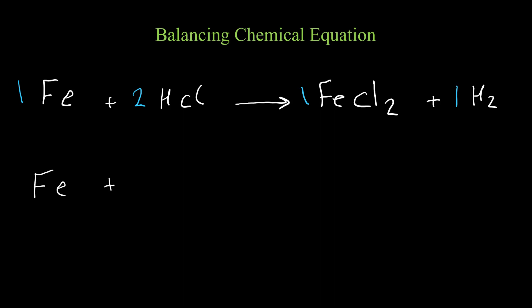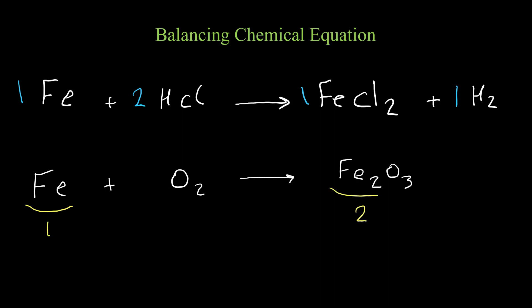Let's have another example: the reaction of iron and oxygen to produce iron(III) oxide. On the left side we have one iron and on the right side we have two iron, so we need to put two in front of iron on the left side. Now iron atoms are balanced. Then we need to balance oxygen.